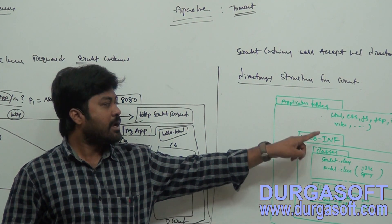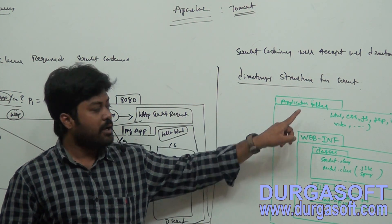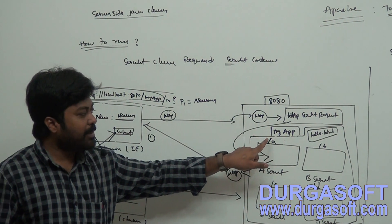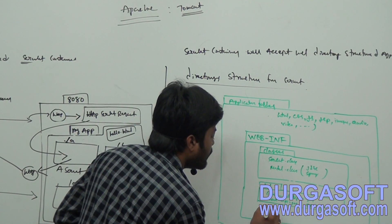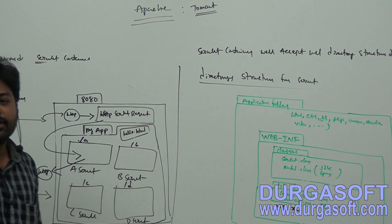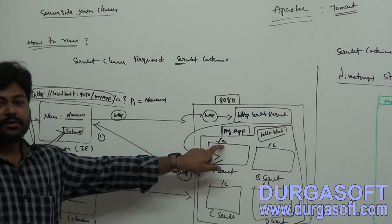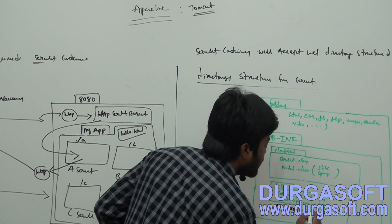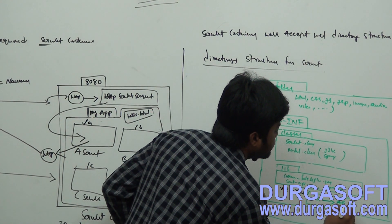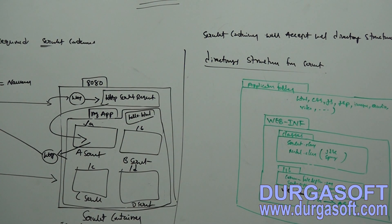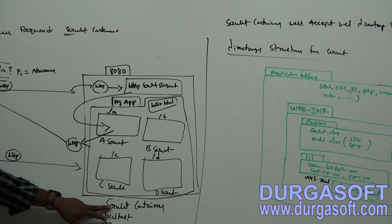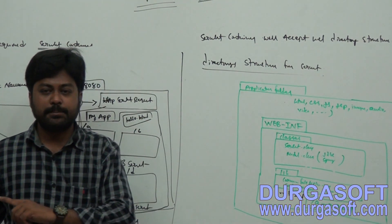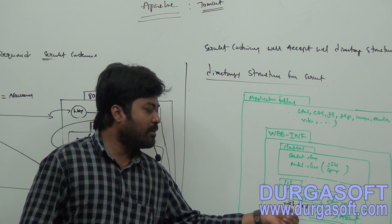Write your servlet classes under the classes folder and your HTML pages under the application folder. Then finally, for the mapping between your browser and servlet, you need mapping URLs. These mapping URLs you need to put under one XML file called web.xml. Inside this web.xml file, you need to put mappings — for example, when I submit form data the address is something like slash A. The mapping between form and servlet needs to be configured under web.xml.